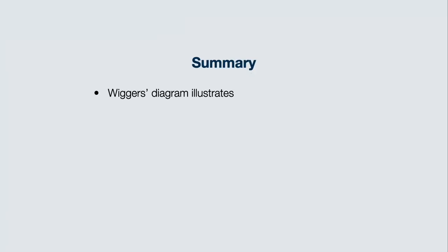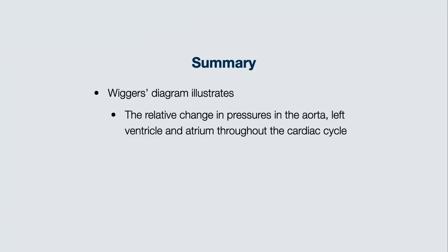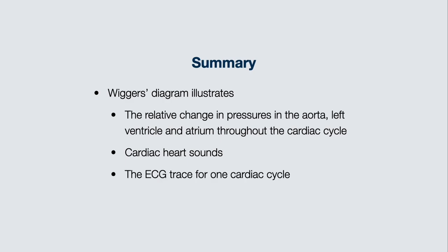In summary, we have reviewed the Wiggers diagram, which illustrates the relative change in pressures in the aorta, left ventricle, and atrium throughout the cardiac cycle. We have also shown how the cardiac heart sounds relate to this, as well as the ECG trace.